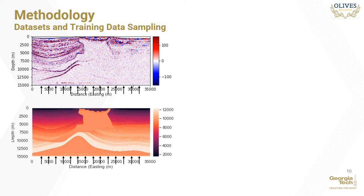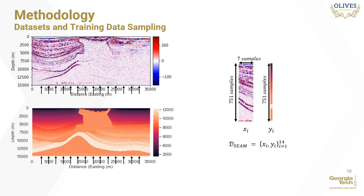We demonstrate our method on the open-source SEAM seismic dataset and the accompanying acoustic impedance model. The seismic data was obtained through reverse-time migration and contains migration and imaging artifacts that may be found in a real-world seismic survey. We uniformly sample a total of 14 training samples over the complete length of the section, giving us a well approximately every 2 km — less than 3% of the total training data available. Each training sample consists of a seismic feature vector x_i: a seismic image 7 samples wide and 751 samples deep, centered at the well position. The label is the acoustic impedance log centered at this feature vector.